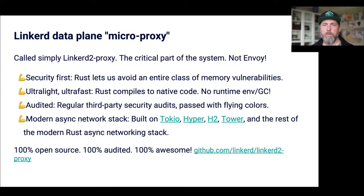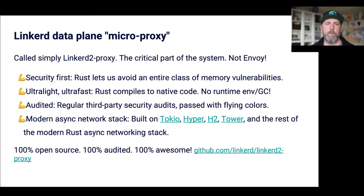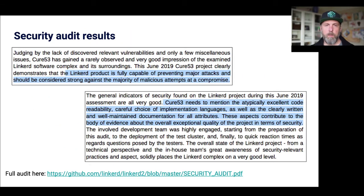We're built on this very dedicated service mesh proxy, which allows us to be extremely fast, extremely low memory, and extremely secure. By writing this in Rust, we avoid a whole class of memory vulnerabilities that are endemic to C and C++. We can be just as fast as the machine will let us be. We're audited thanks to CNCF — we have regular third-party security audits, which we pass. Linkerd 2-proxy is built on an ultra-modern asynchronous network stack, and all of the really interesting asynchronous network programming development is happening in the Rust world today. Everything is open source, Apache V2, 100% audited. Here's a snippet from the security audit — the full audit is in the repo itself. It noted: atypically excellent code readability and careful choice of implementation languages.